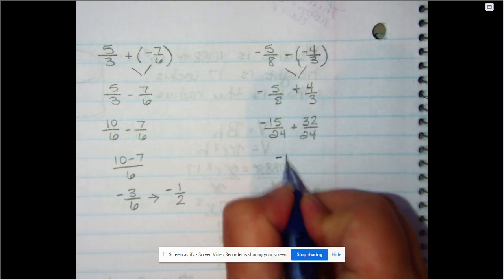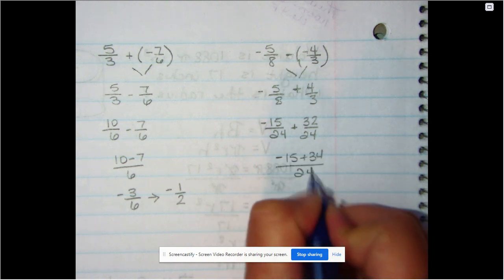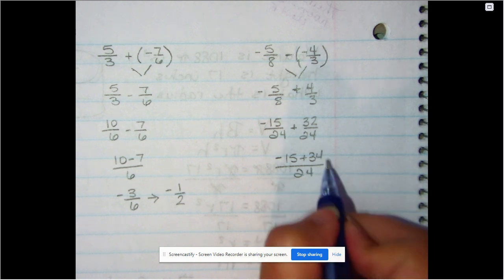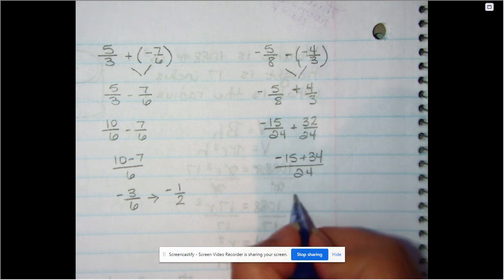Now we have a negative fifteen and a positive thirty-two twenty-fourths. We know there's more positives. How many more? Nineteen. So we have nineteen twenty-fourths.